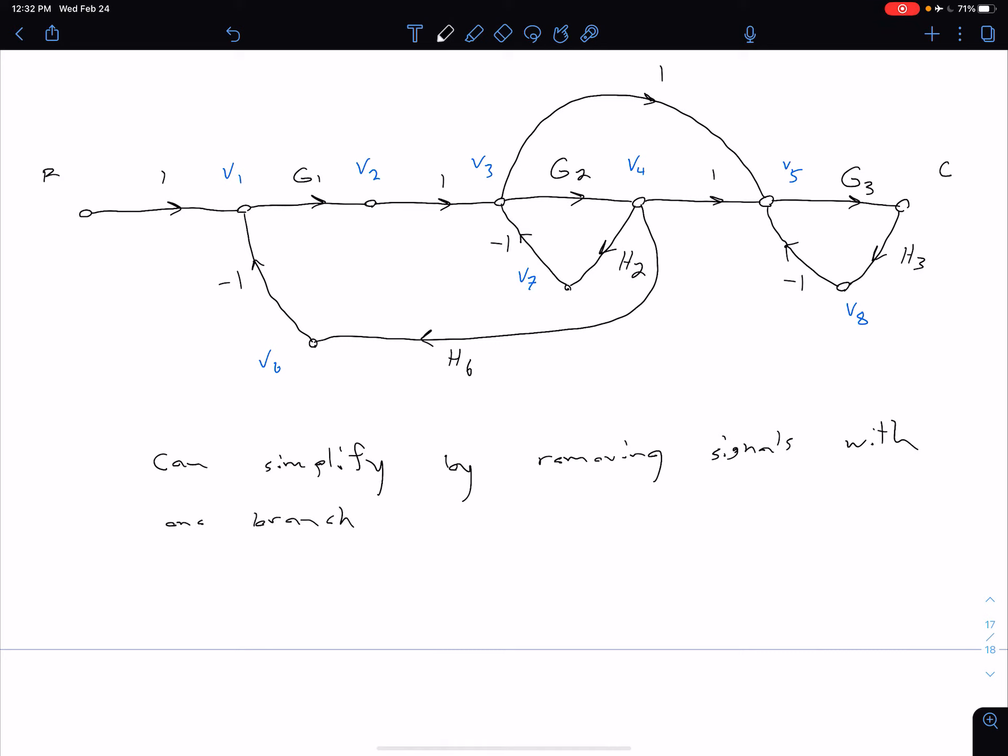And so we see in the signal flow graph above, essentially that's going to be all of our feedback loops as well as our V2. So that's going to be V2, V6, V7, and V8.